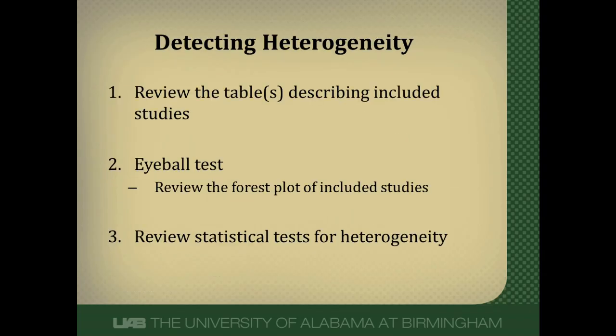There are three things you need to do when reading a systematic review to detect heterogeneity. One is to review the tables describing the included studies — look at who the patients are, what diseases they have, what interventions and outcomes were used, and use your clinical judgment to decide if there is clinical heterogeneity. Number two is the eyeball test: review the forest plot and see if the point estimates line up and whether the confidence intervals overlap. And three, review the statistical test that the authors perform to see if heterogeneity is present.